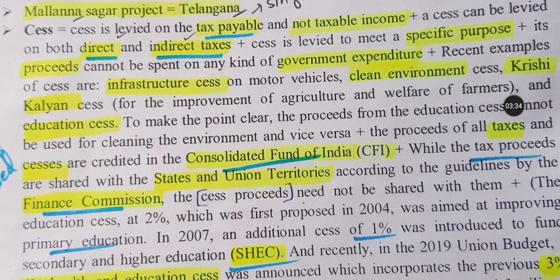To make the point clear: the proceeds from the education cess cannot be used for cleaning the environment, and vice versa. The proceeds of all taxes and cess are credited into the Consolidated Fund of India (CFI). There is also a contingency fund. All tax proceeds go to the Consolidated Fund of India, and cess proceeds also go there.